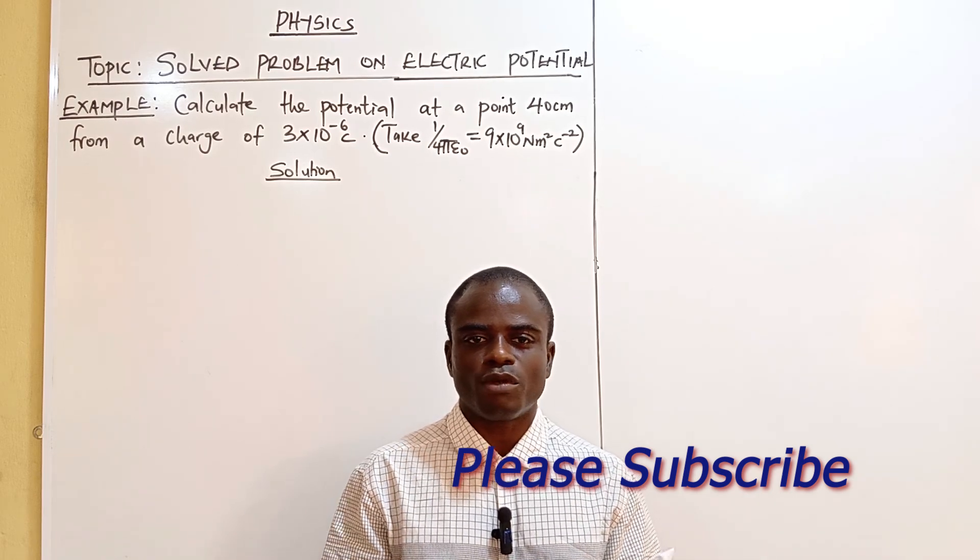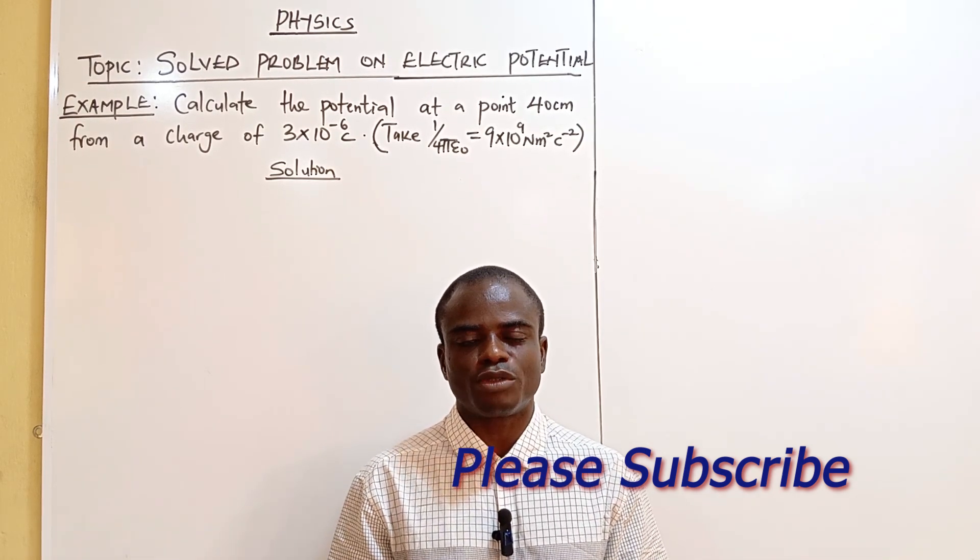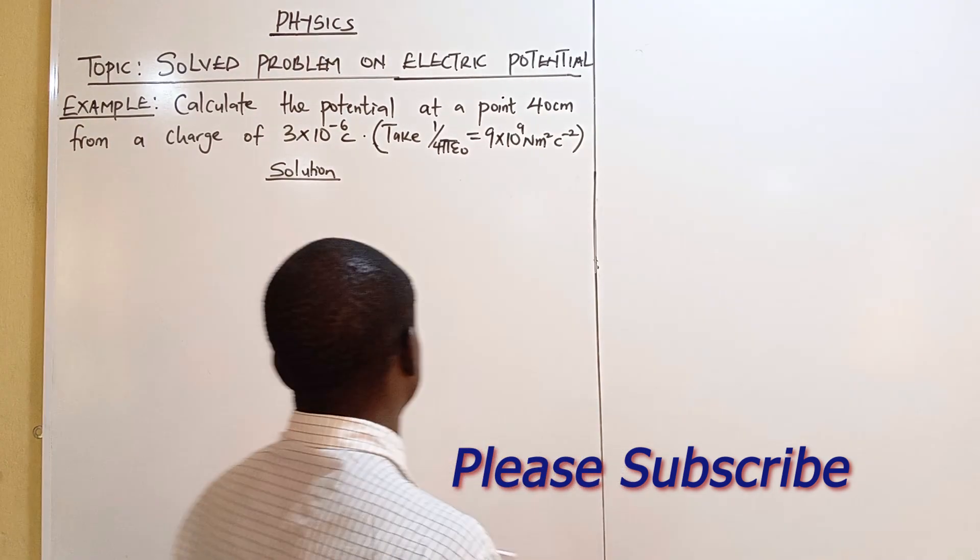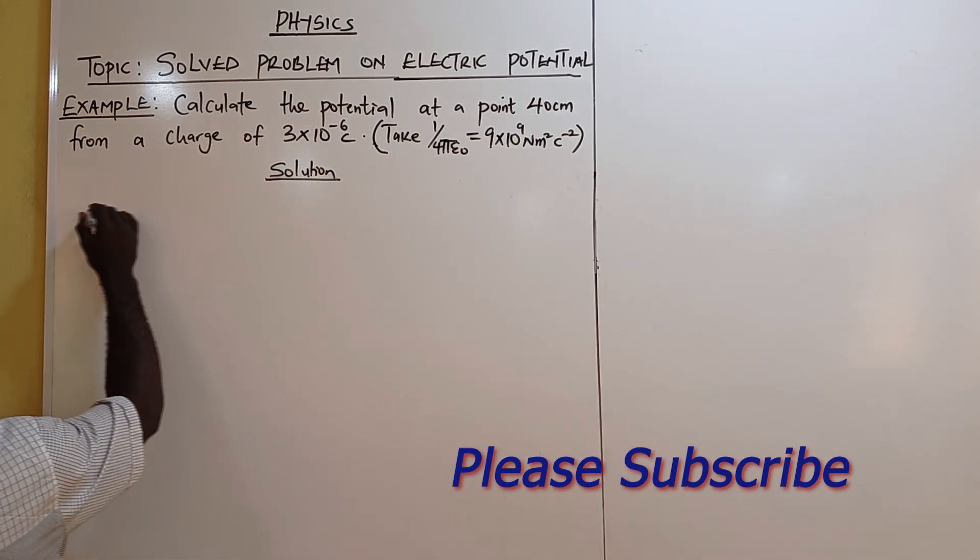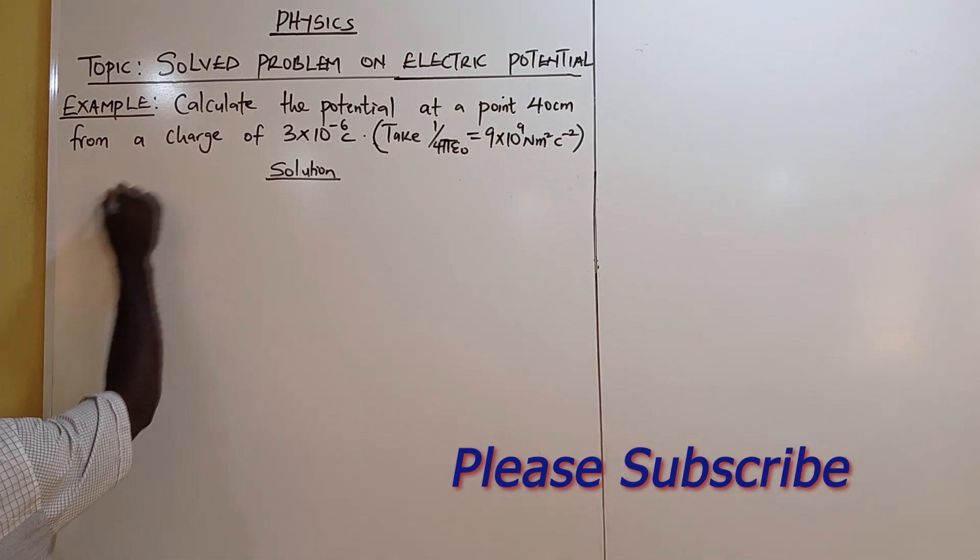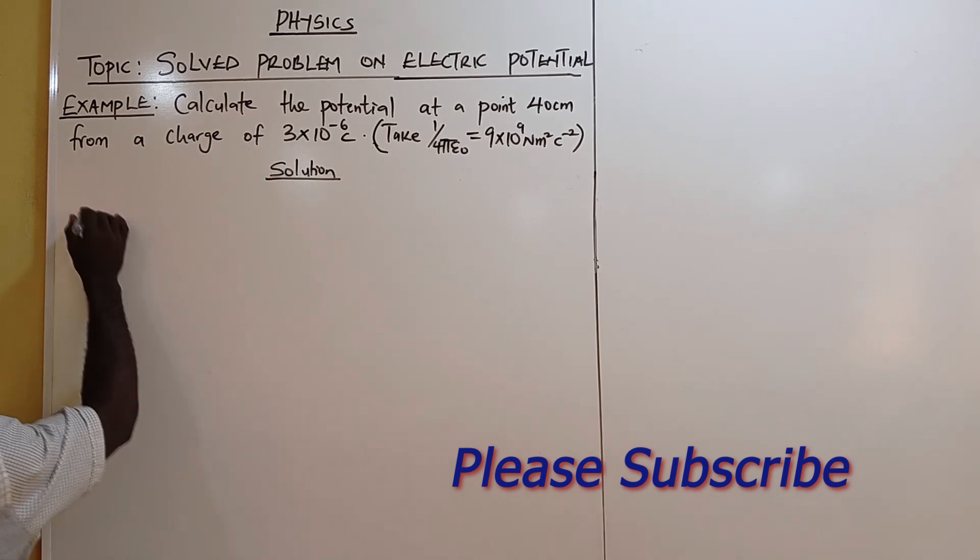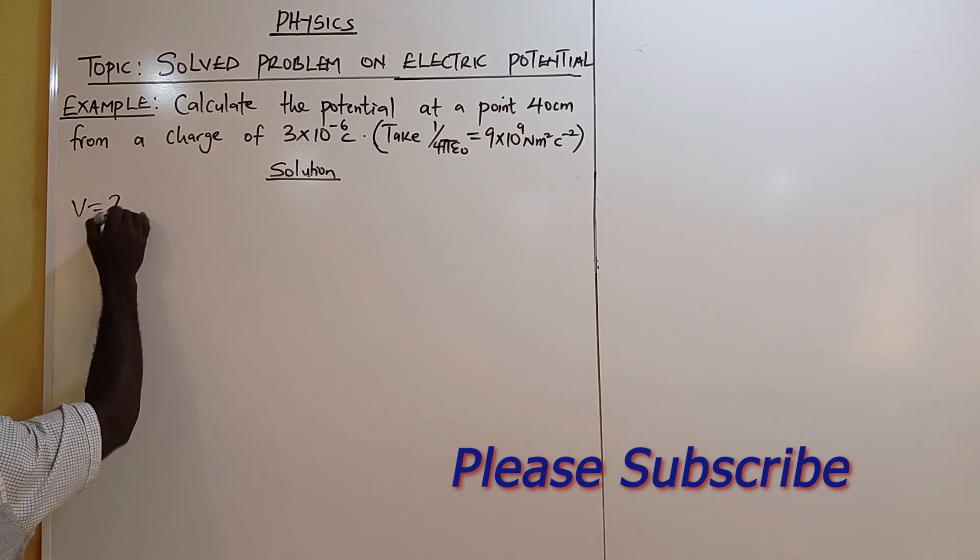We have several formulas under electric potential. But what we need to do is write down the parameters to give you the formula to use. We have to calculate the potential at a point as V.